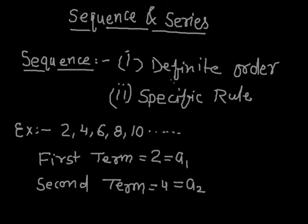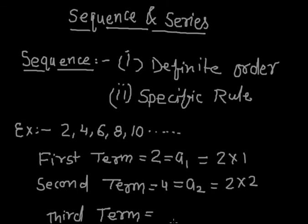Next, specific rule. The first term can also be written as 2 into 1. The second term can be written as 2 multiplied by 2. Now see, the third term. Similarly, the third term can also be denoted by a3 and it can be written as 2 into 3.